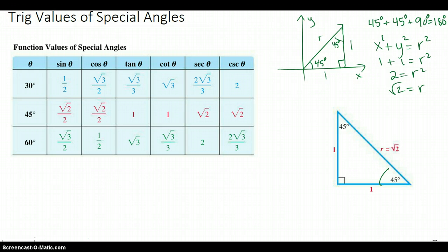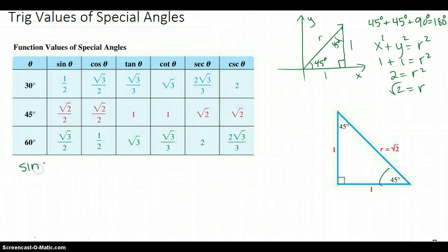Here's a picture from the book of the same thing: 45, 45 degrees, sides of 1, 1, and square root of 2 — which is what we got. So now we can find the six trigonometric functions using this triangle. Let's start with sine of 45 degrees. Sine is, by definition, y over r, which is opposite over hypotenuse, whichever way you want to think of it.